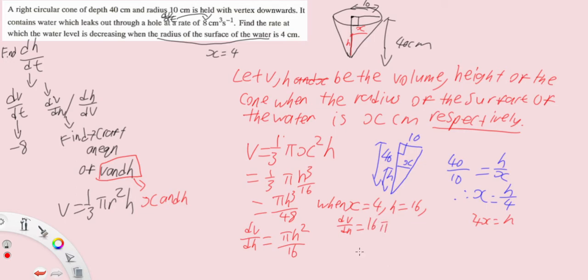Finally we are able to solve the question dh/dt. What I do first is I have dh/dt times dv/dh. We then have 1 over 16 pi because dh/dv equals to 1 over dv/dh times dv/dt which we know to be minus 8, therefore we have minus 1 over 2 pi cm per second.